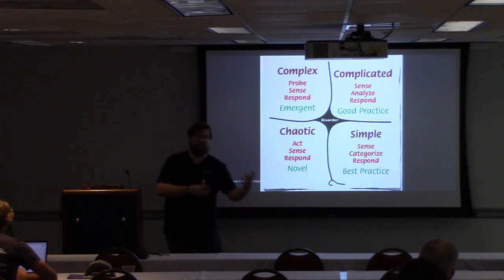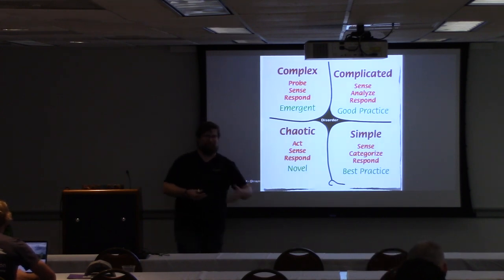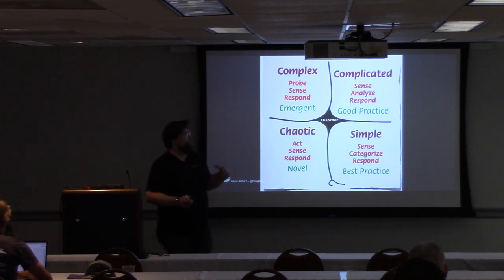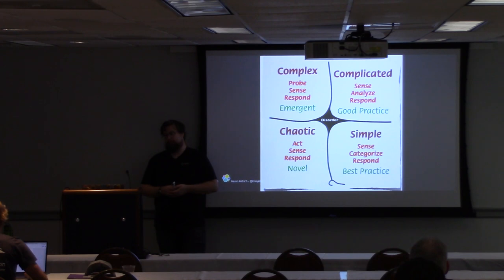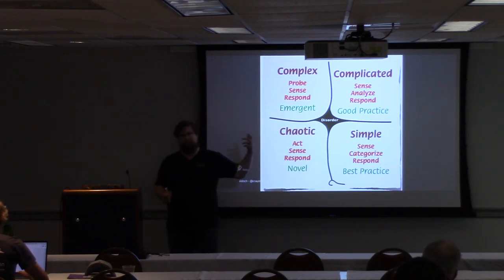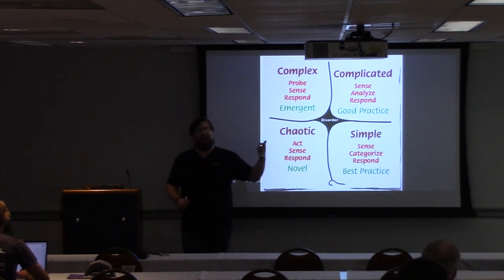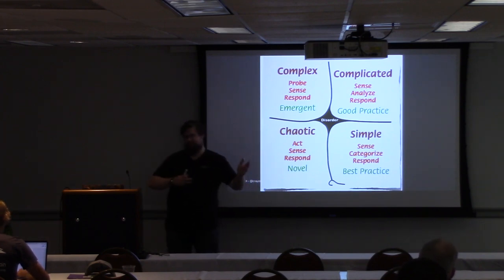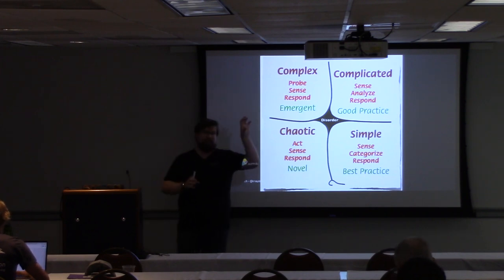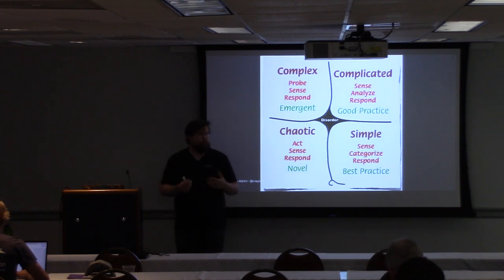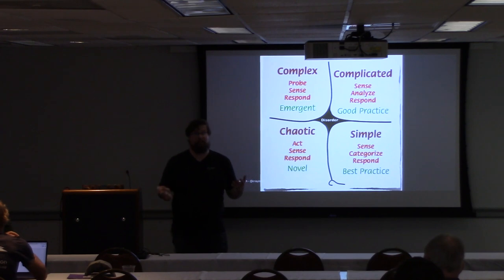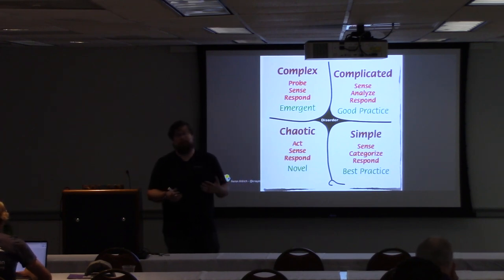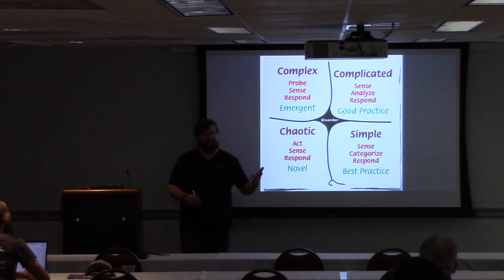Chaotic situations are usually incidents — something went wrong, house is on fire, so you act first and then figure out what caused it. There's a fold between simple and chaotic, because one easy way to end up in a chaotic situation is miscategorizing something as simple: 'I know what this is, I'll do this' — now everything's on fire. That's why problems don't sit specifically in each quadrant but can move around. As technologists, we tend to flock towards the complex domain; we solve a problem, automate it, and then the problem becomes managing that automation, constantly moving toward the new and novel.